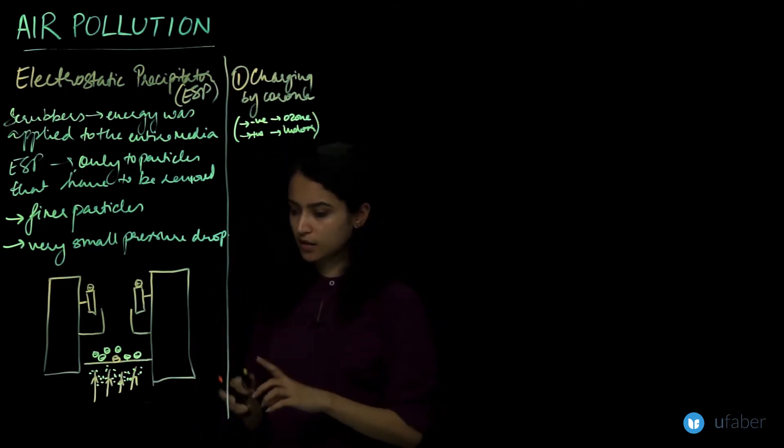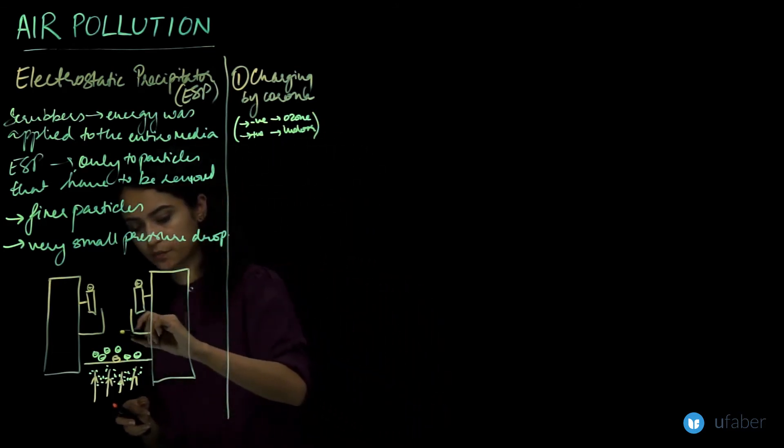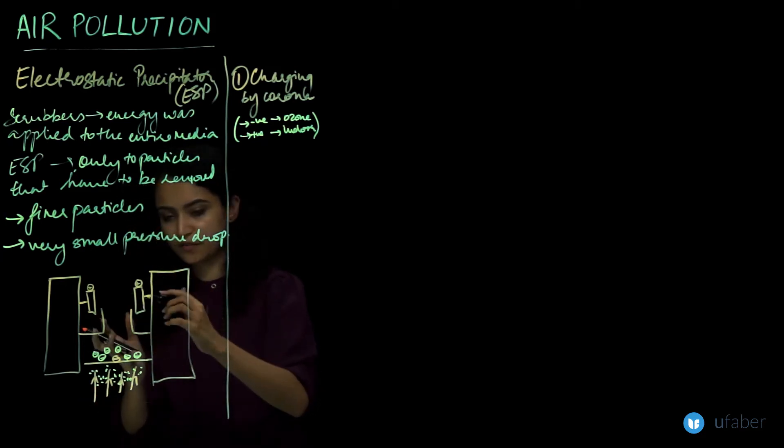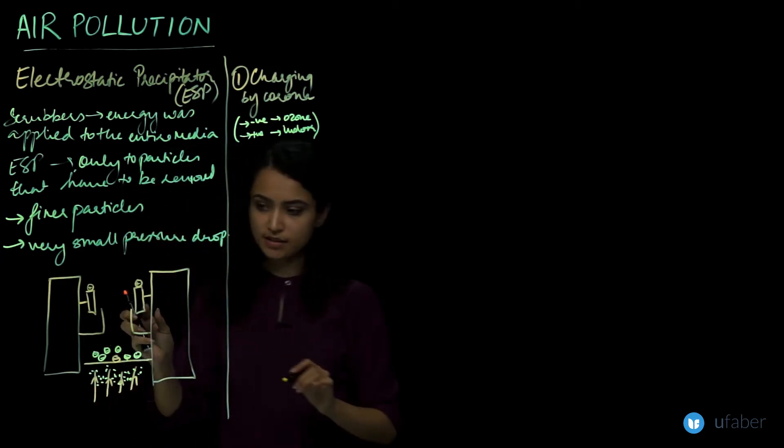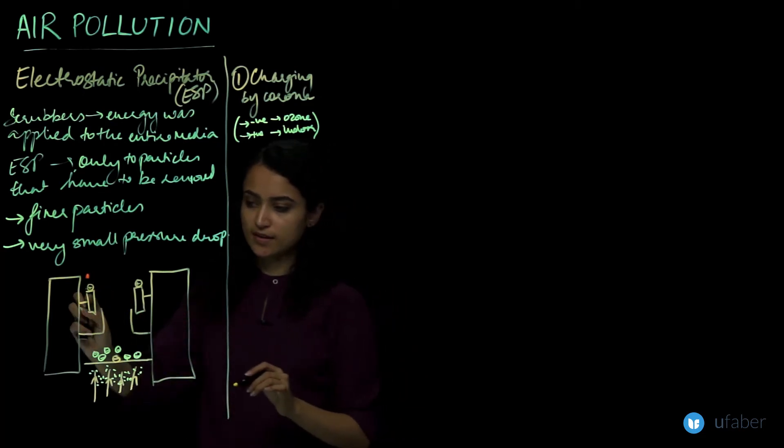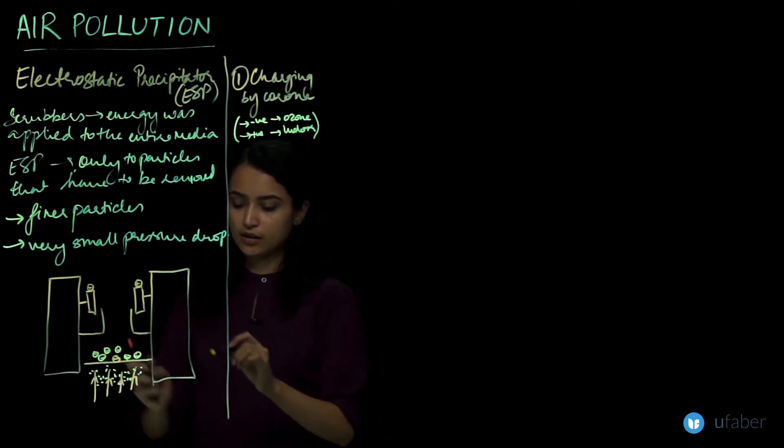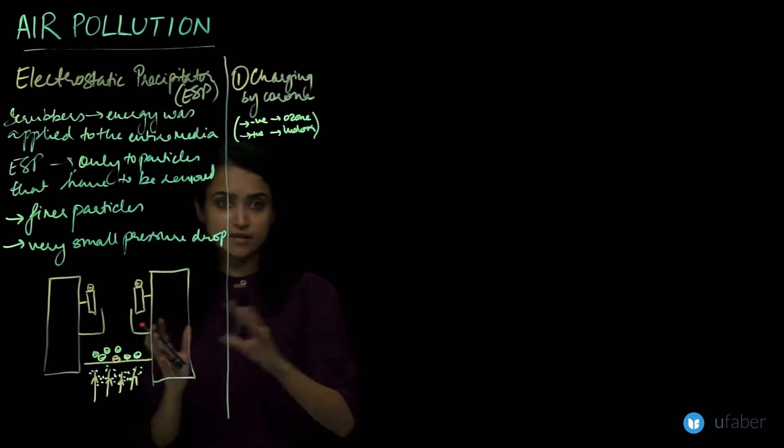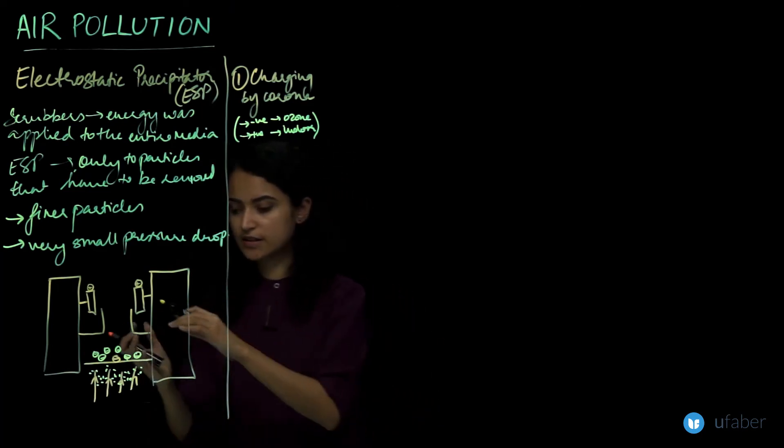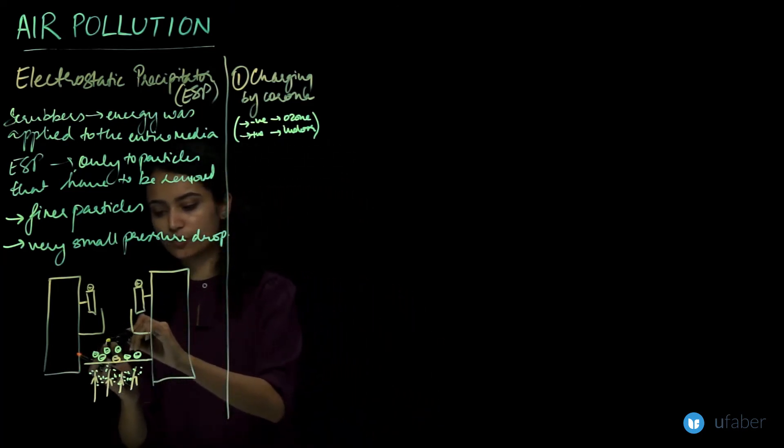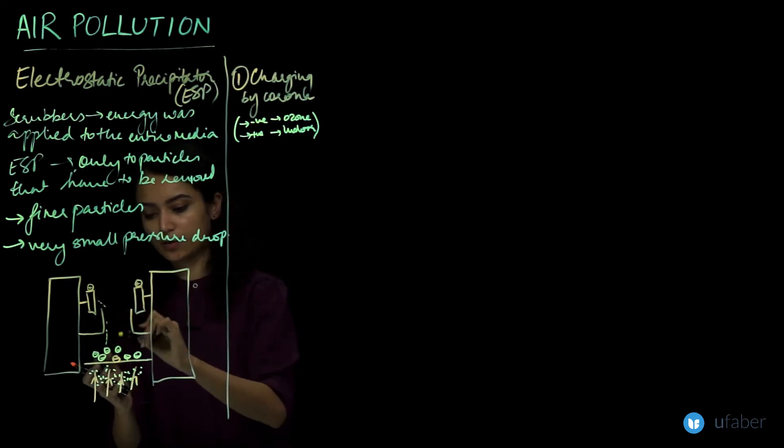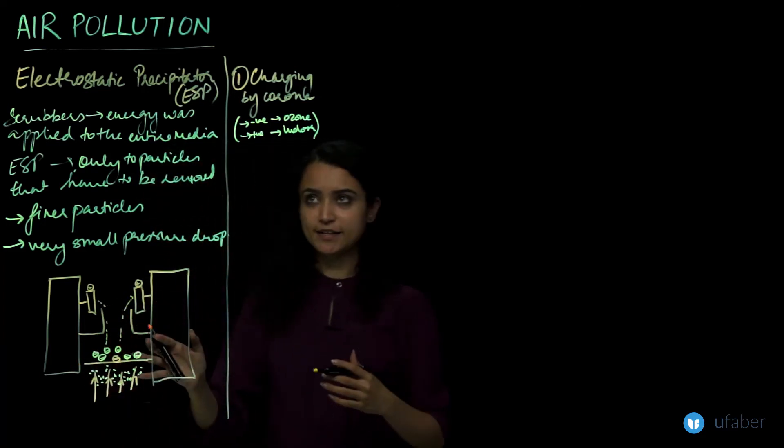Once these particles are charged, they are going to move in this electric field. These are our collecting electrodes, the ones that I've marked with a positive. There is an electric field that is created and these negatively charged particles are going to move along that field and they will be attracted to these positively charged electrodes.